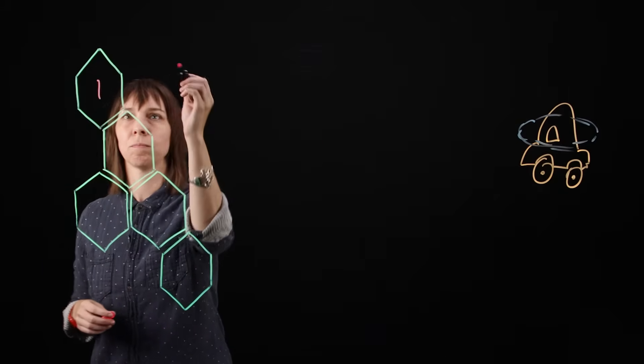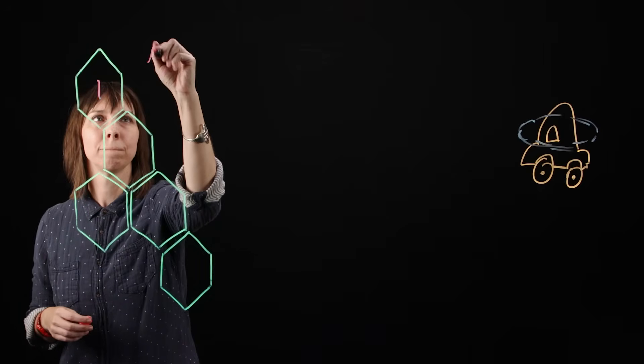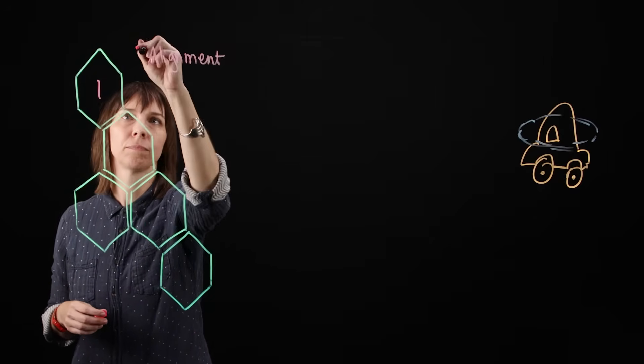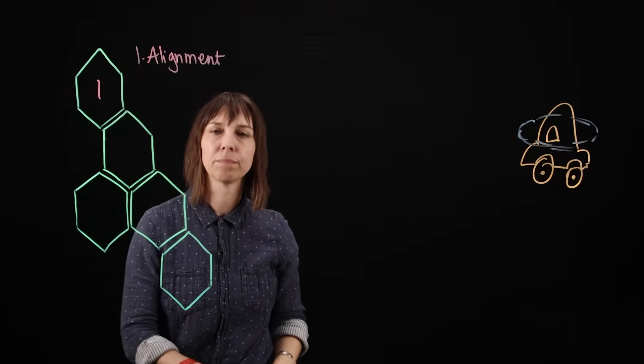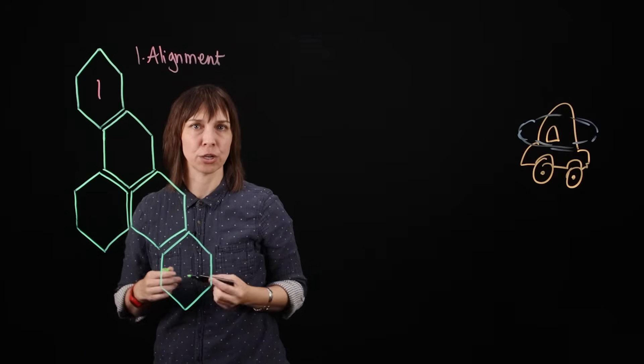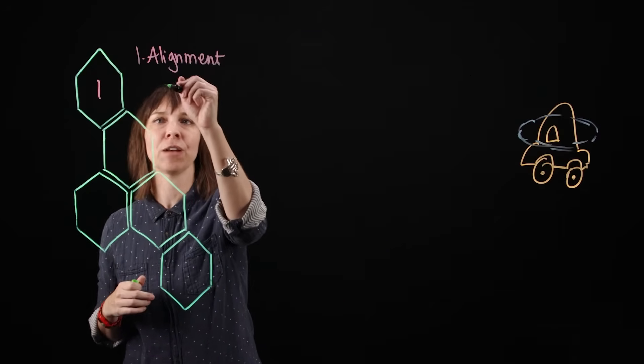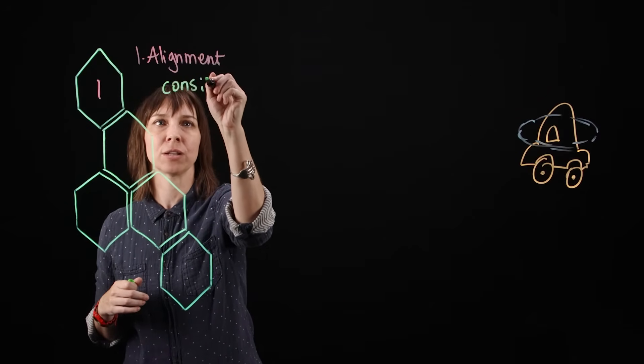Our first governance pillar is alignment. An alignment strategy establishes trust that our agents behave consistently with our values and intentions.